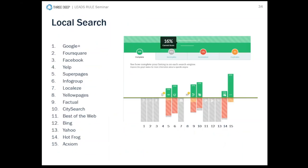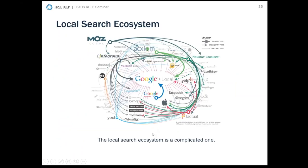Moz Local also shows how your citations are doing — it lists the top 15 directories and tells you which are missing or done well. In one specific case, a location scored 16 out of 100, leaving lots of room for improvement. This is a complicated ecosystem — if you have bad information in Moz Local, it perpetuates through the entire local digital ecosystem. There are over 200 directories and citations where you can be found locally, so start with getting your data accurate, then focus on top directories, and they'll filter through to others.